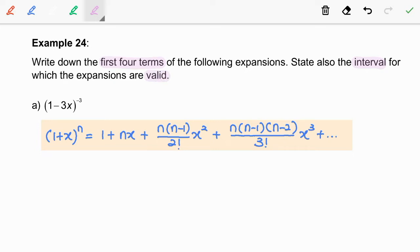Question A: 1 minus 3x to the power of negative 3. Here, the power number given is a negative integer, negative 3. So, we are going to use this binomial formula.